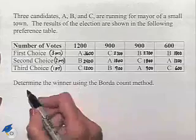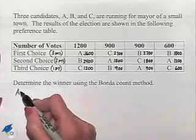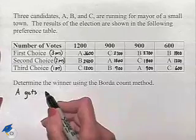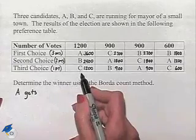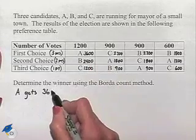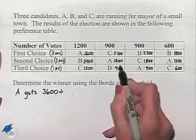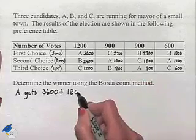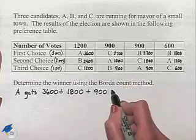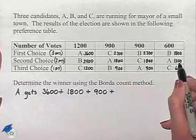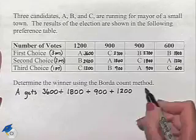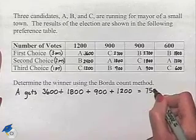Now we're going to tally up our points. Let's start with candidate A. We're going to run through each column and write down the number of points we see for the candidate. In our first column, we have 3,600 points for candidate A. In our next column, 1,800 points. In the next column, A gets 900 points, and in our last column, A gets 1,200 points. Combining those values gives us 7,500 points.